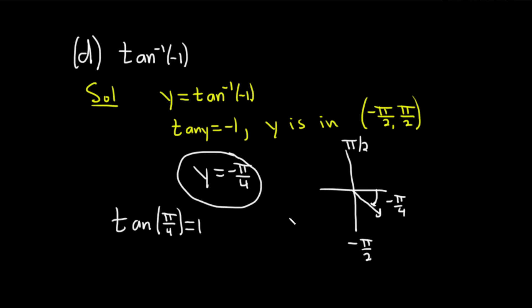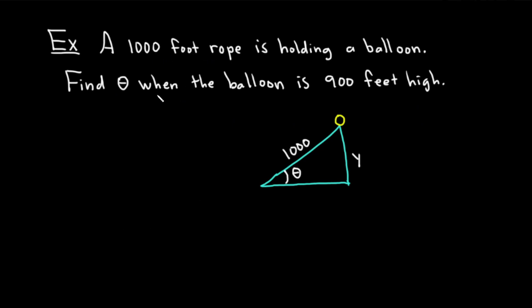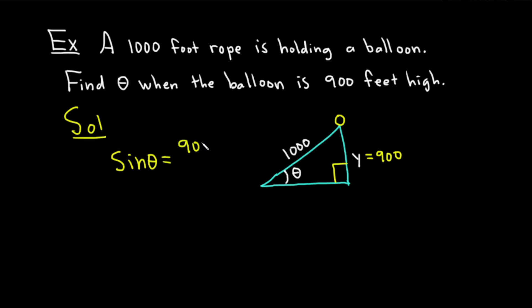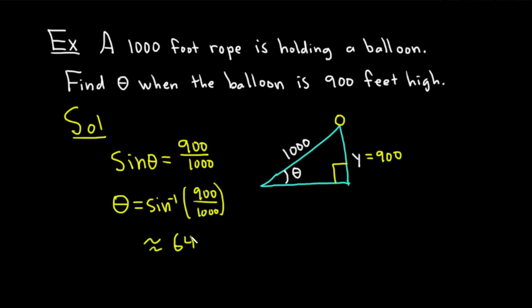Let's do something different. A 1,000-foot rope is holding a balloon. Find θ when the balloon is 900 feet high. We're looking for θ when y equals 900. We have the opposite side and the hypotenuse in this right triangle, so we use sine: sin(θ) = opposite/hypotenuse = 900/1000. That means θ equals the inverse sine of 900/1000.